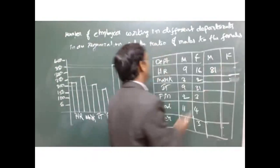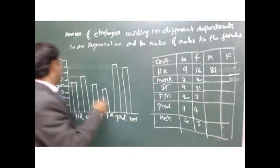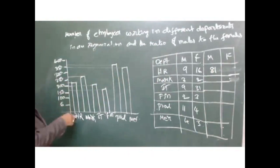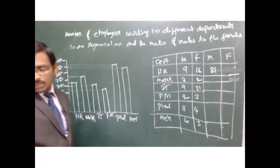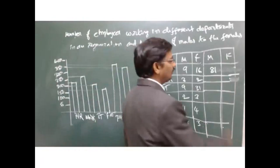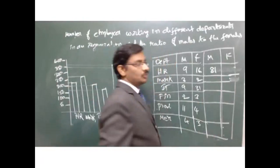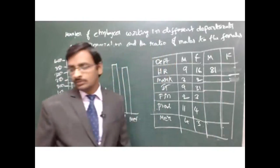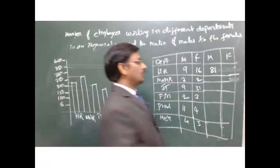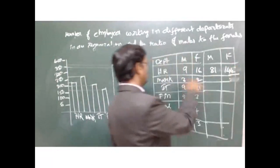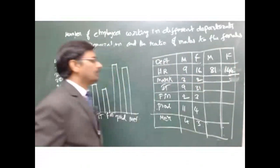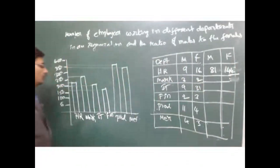So the total employees in HR department is 225 members. With a 9 to 16 ratio - 9 plus 16 equals 25 - so 225 divided by 25 gives 9 males per unit. That gives 81 males and 144 females in HR department.